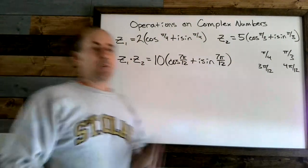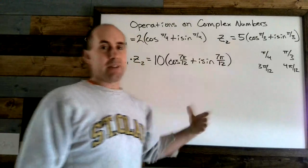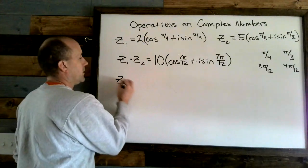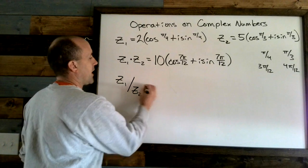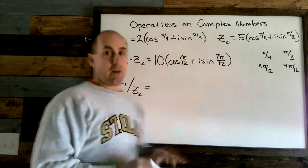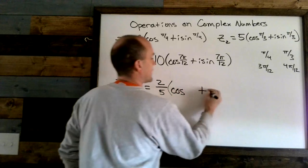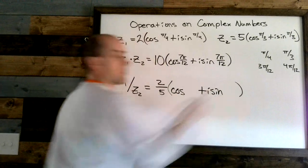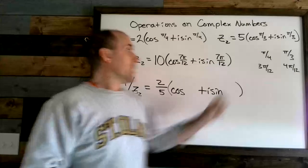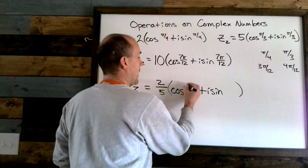To recap: if you're multiplying two complex numbers, you multiply the r values and add the theta values — that gives you your result. For z₁ divided by z₂, instead of multiplying the r values you divide them, giving 2/5. Then instead of adding the angles, you subtract them: 3π/12 minus 4π/12 gives negative π/12.